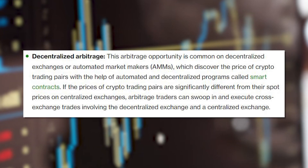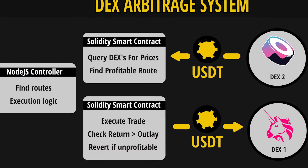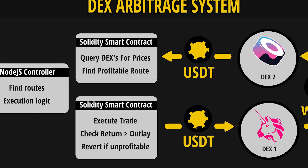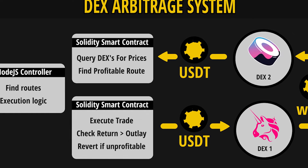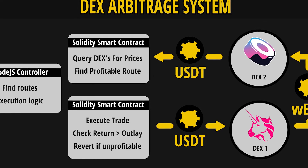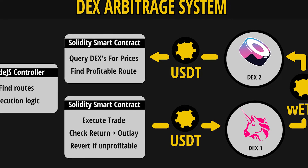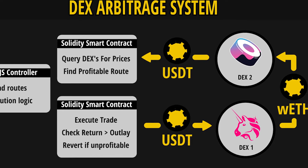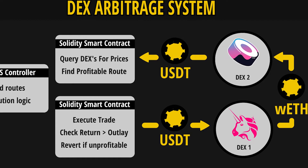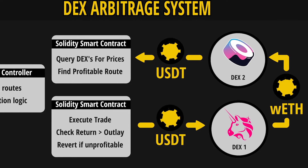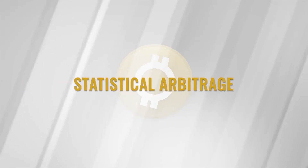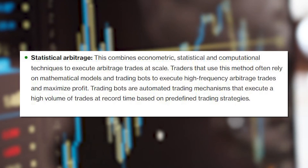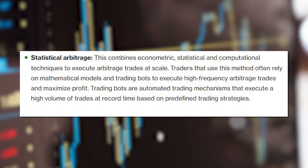Decentralized arbitrage is a popular arbitrage opportunity on decentralized exchanges or automated market makers, which determine the price of crypto trading pairs using automated and decentralized programs known as smart contracts. Arbitrage traders can rush in and execute cross-exchange deals between the decentralized exchange and a centralized exchange if the prices of crypto trading pairs diverge significantly from their spot values on centralized exchanges.